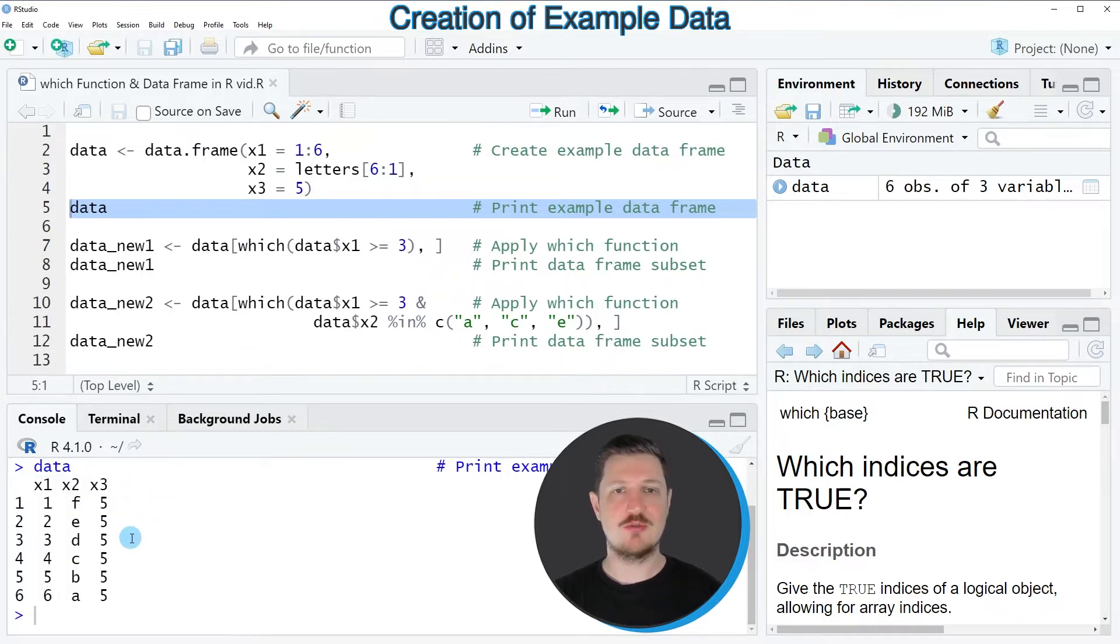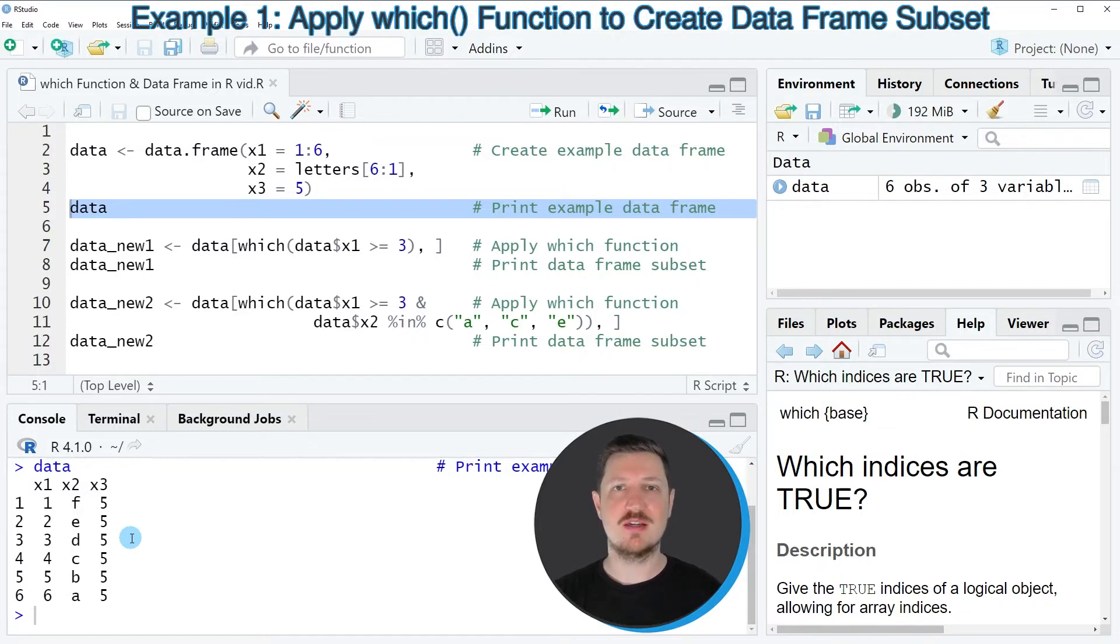Now let's assume that we want to create a subset of this data frame using the which function. Then we can apply the code that you can see in line seven. So in this line of code, I'm applying the which function to create a logical condition which says that I only want to keep those values where the column x1 is greater or equal to the value 3.